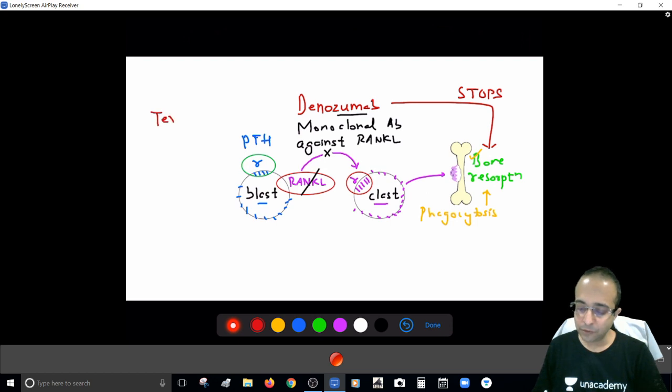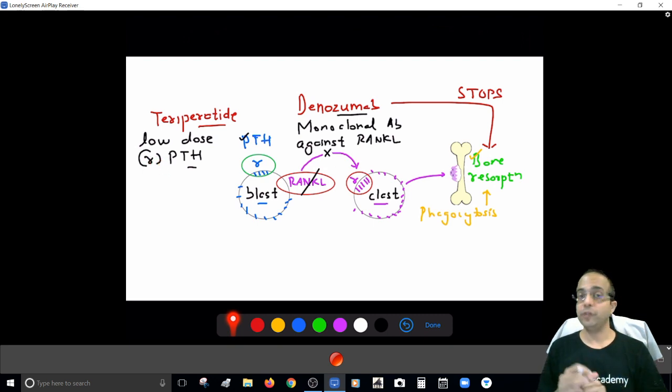With this cycle, you will also be very easily clear with this particular drug, Teriparatide. Now this Teriparatide is actually parathyroid hormone, but I just like to specify this part. It is a very low dose of recombinant parathyroid hormone. Recombinant means artificially manufactured.